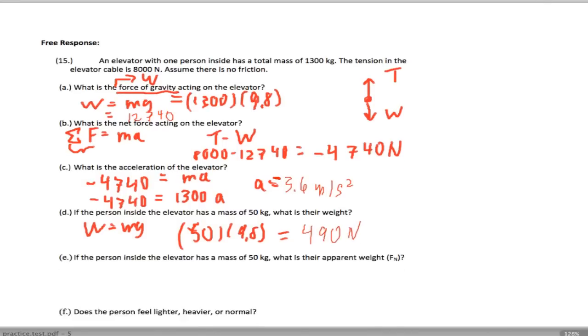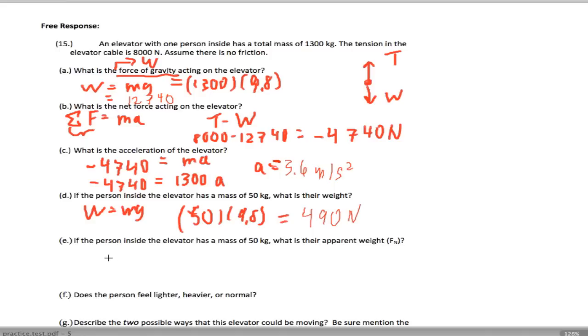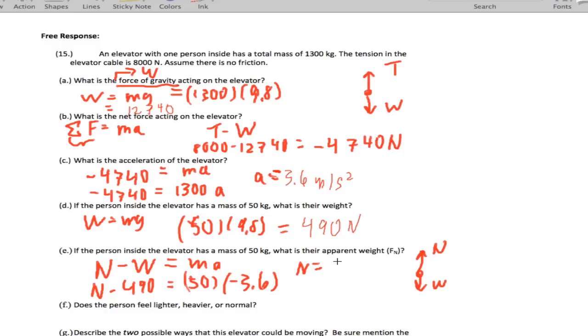Let's get the apparent weight of this person. The normal force minus the weight equals MA because we're in the elevator. We have the normal force on the floor and the weight pushing down. So normal force minus 490 equals 50 kilograms times negative 3.6, giving us a normal force of 310 newtons.